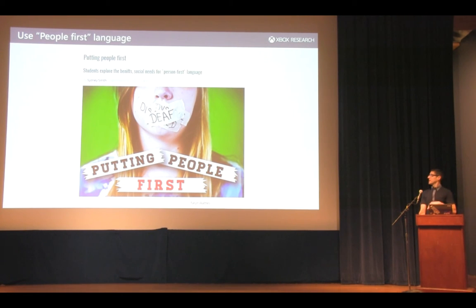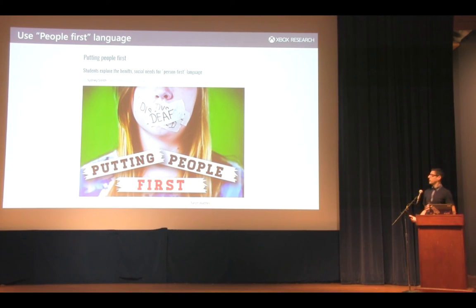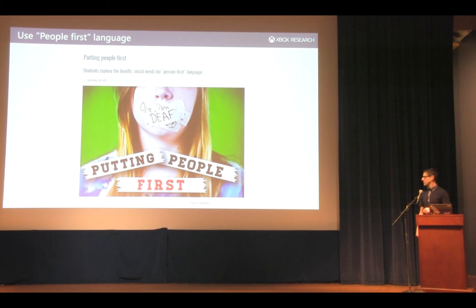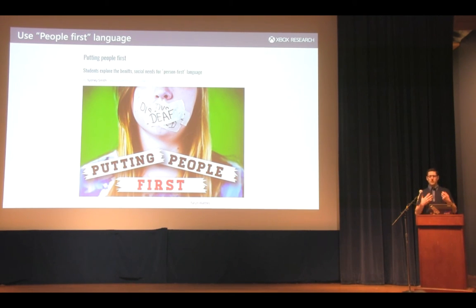The next thing we learned is using people-first language. What we say is important. How we talk to people is important — building rapport with participants, building empathy. What we've found is that within this community, they are really pushing for people-first language. What that means: instead of saying 'you're a deaf gamer,' it's 'you're a gamer with deafness.' A 'deaf gamer' makes it sound like I'm deaf and I happen to play games — but really we want to think of them as: I'm a gamer, I'm a person, I'm a mom, I'm whatever, who happens to be deaf. This is coming from the community, and it helps build empathy with participants, team members, and members of that community.